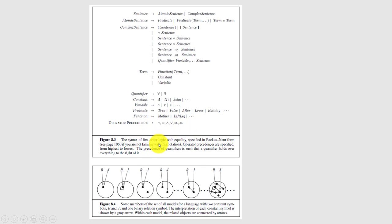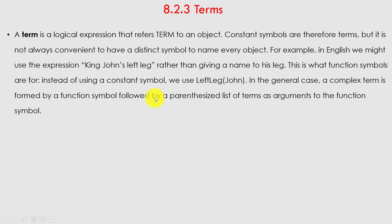This diagram shows some members of the set of all models of a small language with two constant symbols R and J and one binary relation symbol. The interpretation of each constant symbol is shown by a gray arrow; within each model the related objects are connected by arrows. A term is a logical expression that refers to an object. Constant symbols are therefore terms, but it is not always convenient to have a distinct symbol to name every object — in English we might say 'King John's left leg' rather than giving that leg a name.